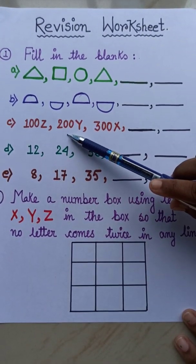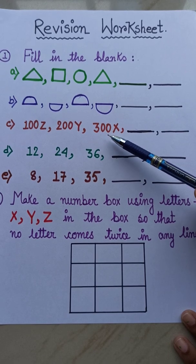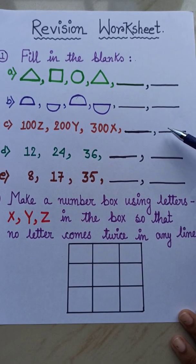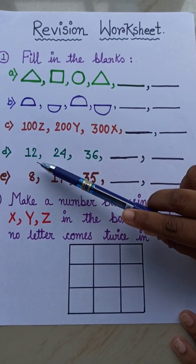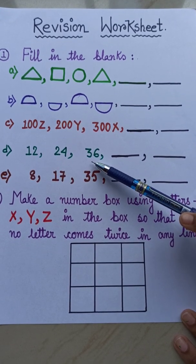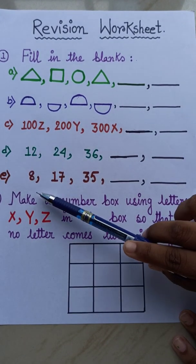The third one also, 100Z, 200Y, 300X. So what will be the next? Next one, 12, 24, 36. What will be the next?